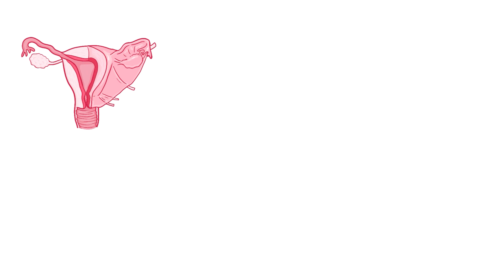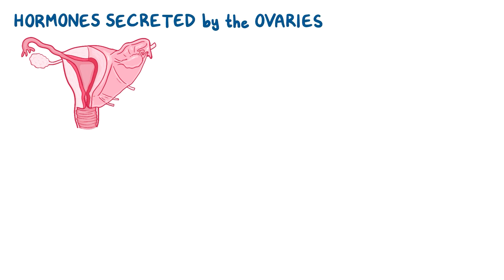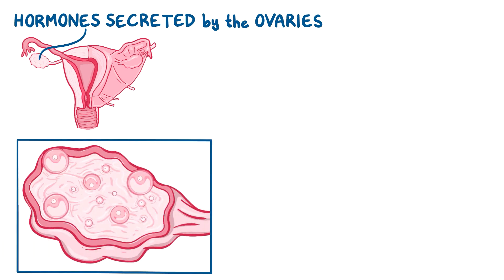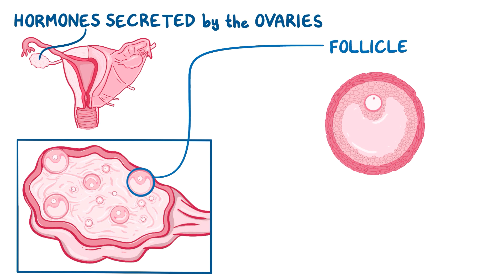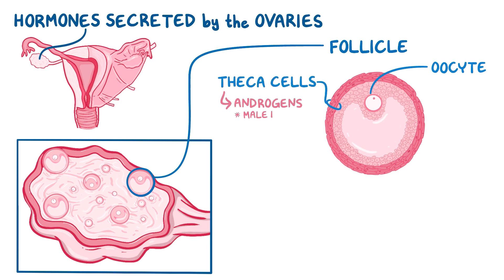The growth of the functional layer is regulated by the hormones secreted by the ovaries. Each ovary is made up of a number of ovarian follicles. Each follicle consists of an oocyte, which is the female germ cell, surrounded by an outer layer made up of theca cells which secrete androgens, also known as the male hormones, and an inner layer made up of granulosa cells which secrete estrogen.